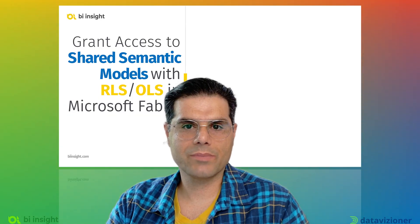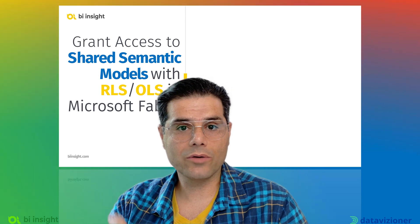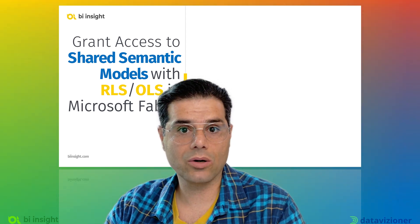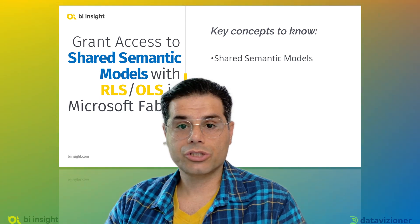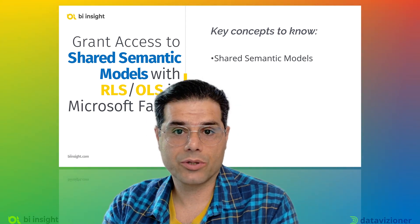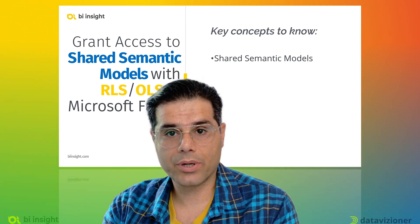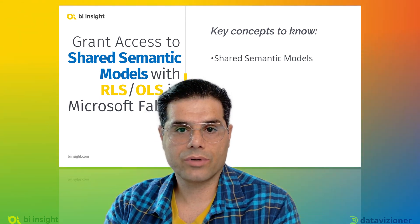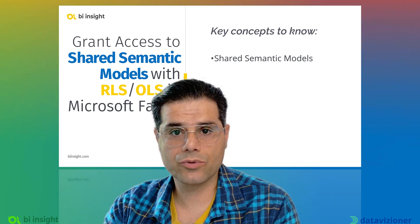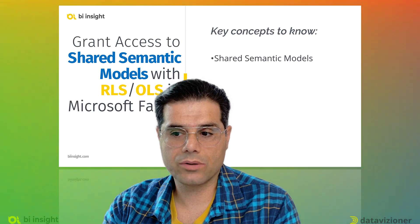To efficiently grant access to shared semantic models with either row-level security or object level security in Microsoft Fabric, there are a couple of steps we need to take. First, we need to understand what shared semantic models are. This concept relates to workspaces in Microsoft Fabric and Power BI — we have corporate workspaces and personal workspaces.